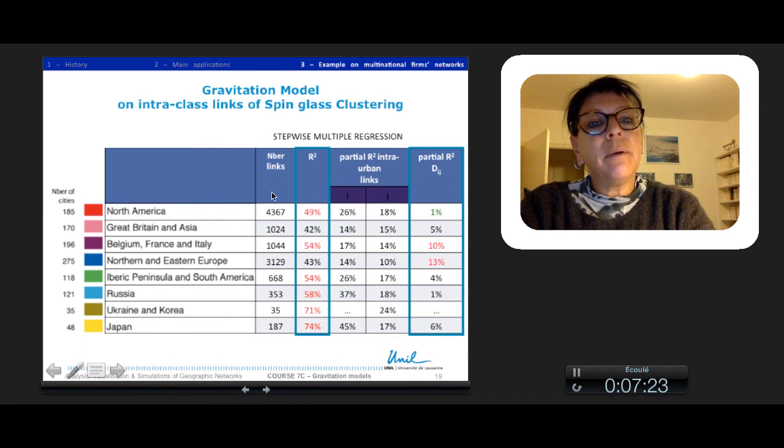And then we found much better results, and especially you see with Russia, with Belgium, France, Italy, we have much higher R-square which are very good. But the distance is always quite low, and only inside Europe we have more than 10% of the partial R-square for the distance.